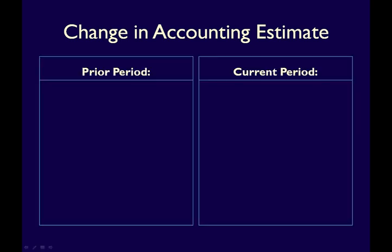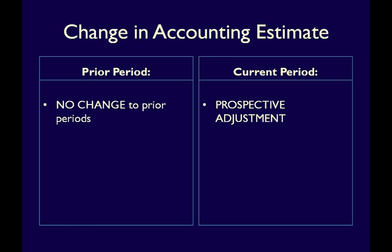Because a change in estimate is based on new information, the change does not relate to prior periods. When the estimate was made in the prior period, it was the information available then that was important. As long as the estimate was made in good faith using the information available at that time, it should not be changed. That's why a change in estimate does not require any changes to past financial statements. Instead, it is treated as a prospective adjustment, meaning the change is implemented for the current and future periods only. Past periods are never changed.